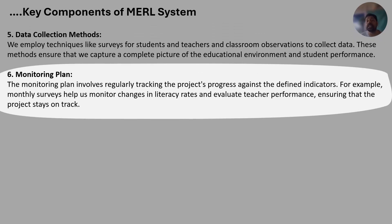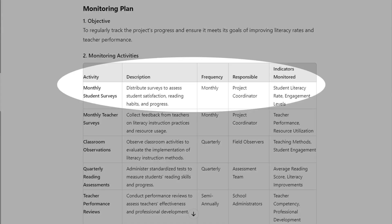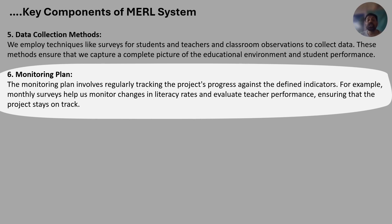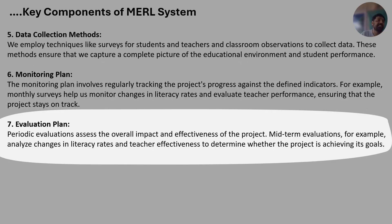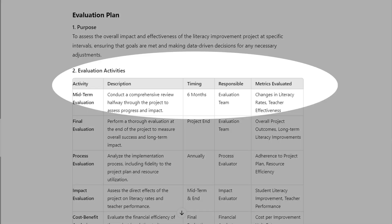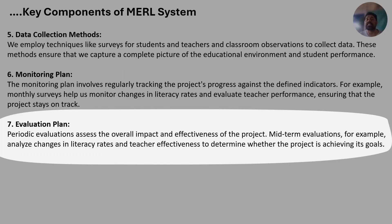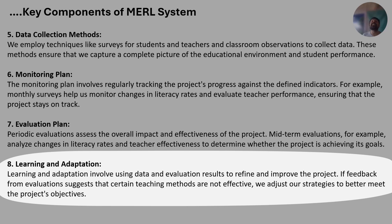The monitoring plan involves regularly tracking the project's progress against defined indicators. For example, monthly surveys help monitor changes in literacy rates and evaluate teacher performance to keep the project on track. The evaluation plan involves periodic evaluations assessing the overall impact and effectiveness of the project — for example, a midterm evaluation analyzes changes in literacy rates and teacher effectiveness to determine whether the project is achieving its goals.